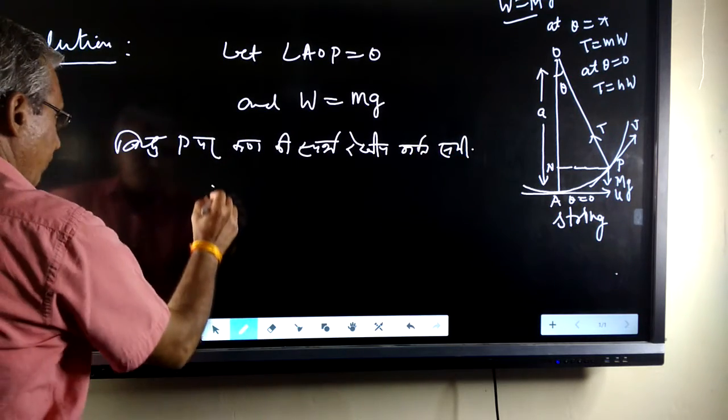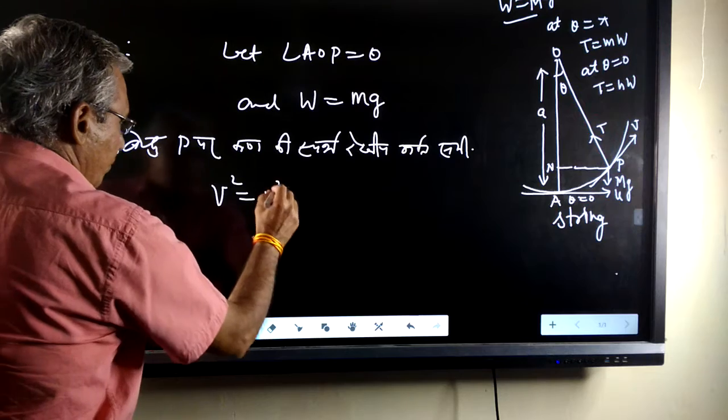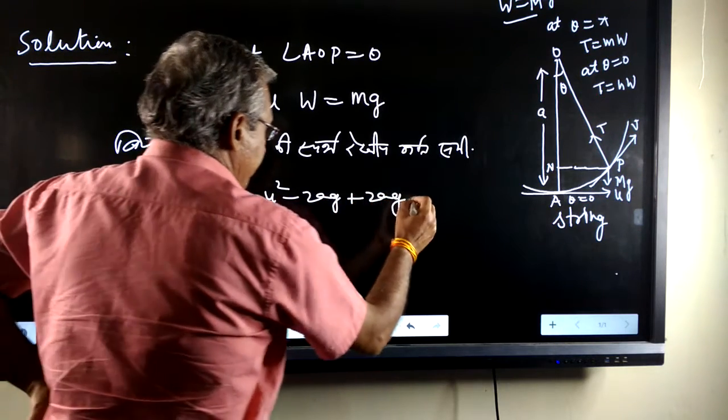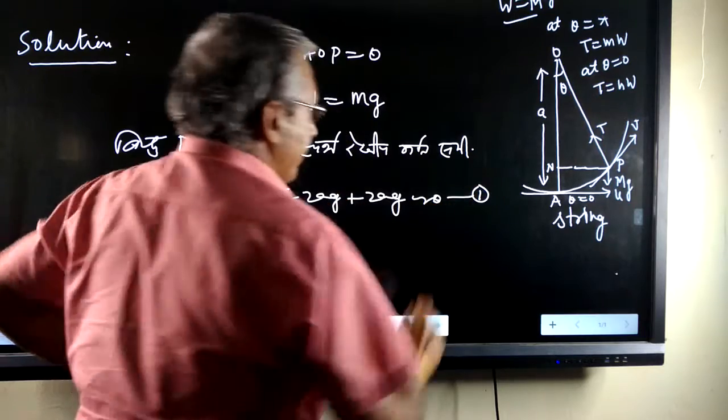This is v square equal to u square minus 2ag plus 2ag cos theta.